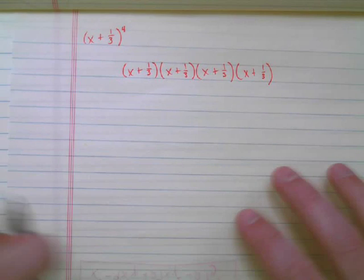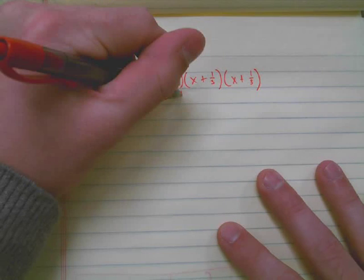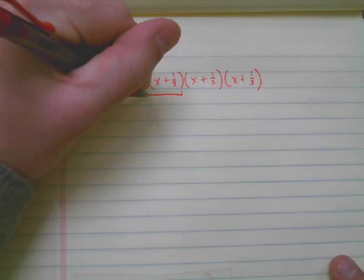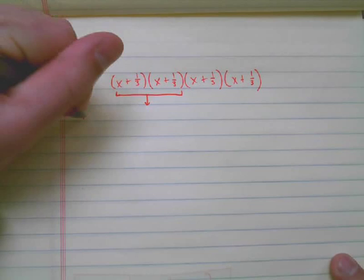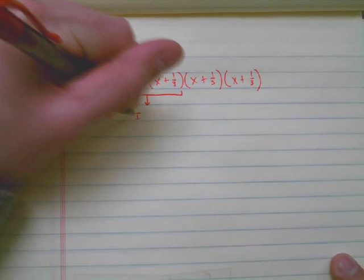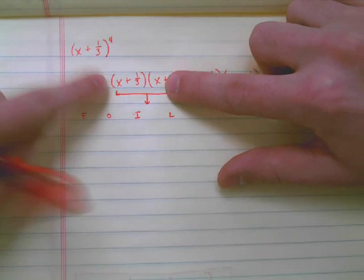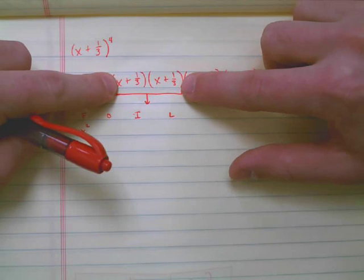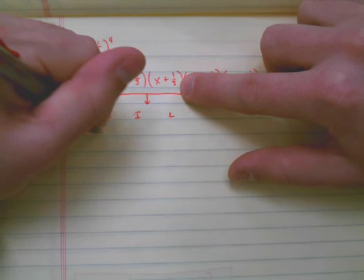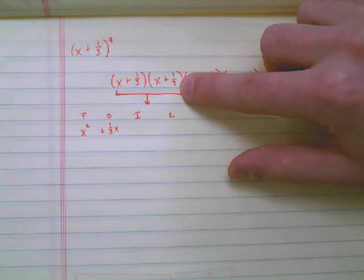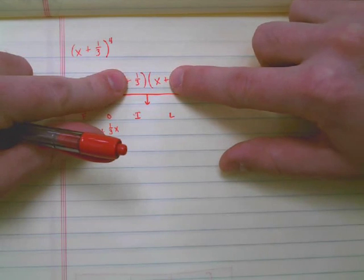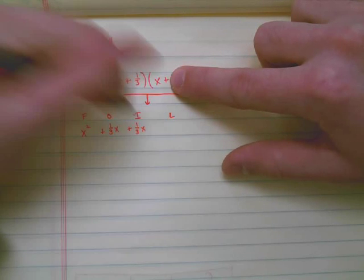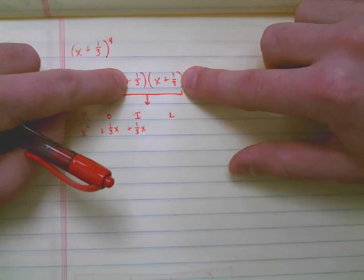So what I can do then is I know that I can combine just these two. Let's say that we multiply these two first. So I'm going to FOIL them out like such. First terms, I have x times x, which is x squared. Outer terms, I have an x times a one-third, which gives me one-third x. Inside terms, I have one-third times an x, which gives me another one-third x. And then I have the last terms, I have one-third times one-third.